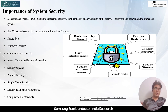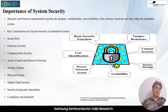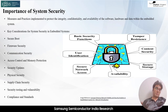Furthermore, embedded systems operate within interconnected environments, making them potential entry points for broader network attacks. Ensuring system security helps prevent compromised embedded devices from being used as gateways to infiltrate larger networks, thus protecting the integrity of the entire ecosystem. Additionally, ensuring system security in embedded devices enhances user trust and confidence. End users expect these devices to be secure, whether it is a smart home device, a medical implant, or a vehicle. Robust security measures inspire confidence and reduce concerns regarding privacy, safety, and the potential misuse of personal information.